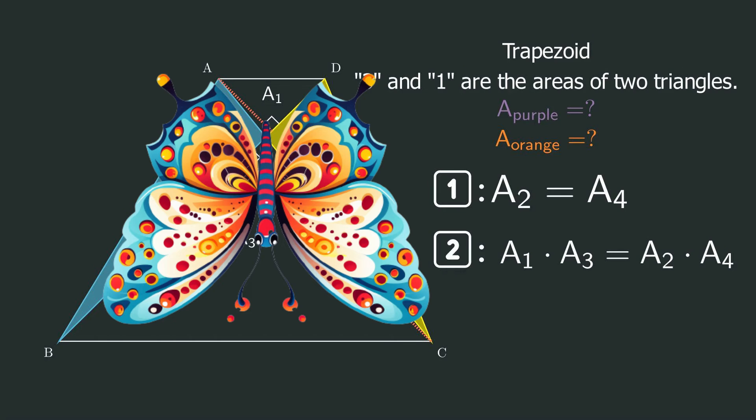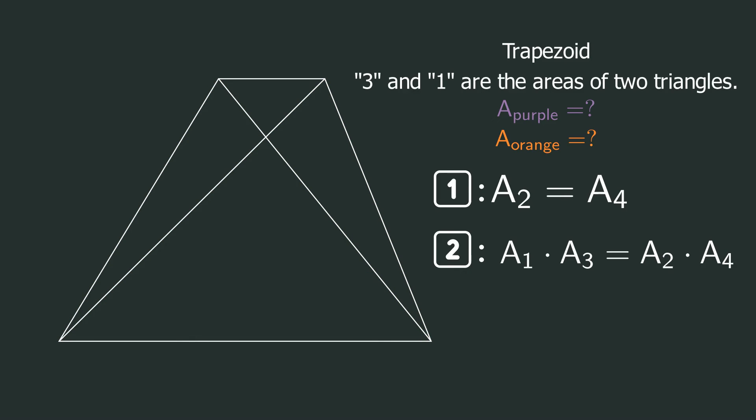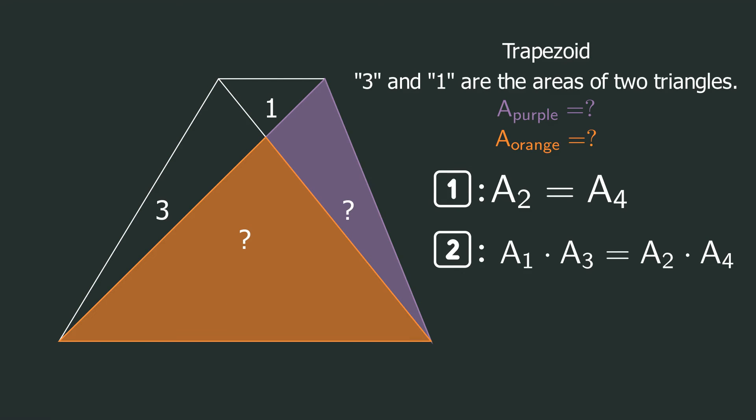We can remember it like this: the left and right wings of a butterfly are the same, and multiplying the head and tail equals multiplying the two wings. Now return to the problem - wouldn't you be able to quickly come up with the final answer?